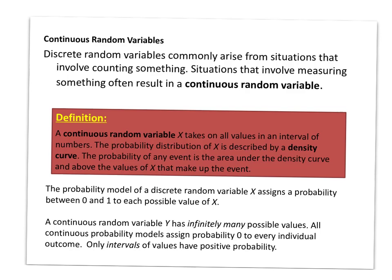A continuous random variable takes on all values in an interval of numbers. For example, if I ask you to pick a random number between zero and one, there are an infinite amount of answers there, because if you include every decimal number between zero and one, there's a lot of numbers there.